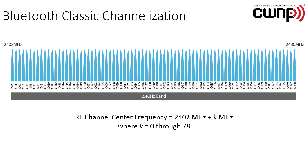Bluetooth really comes in two basic versions. There's Bluetooth Classic and Bluetooth Low Energy, or BLE. We'll look at Classic first, which includes what is called BR, or basic rate, and EDR, or enhanced data rate.